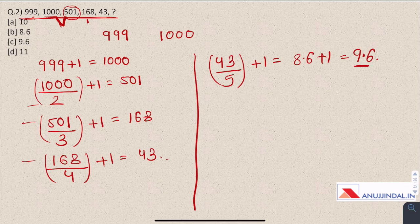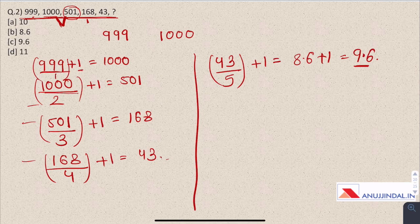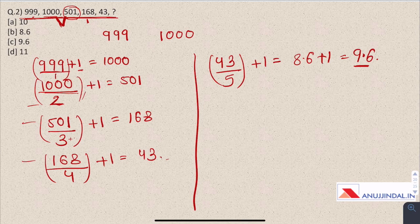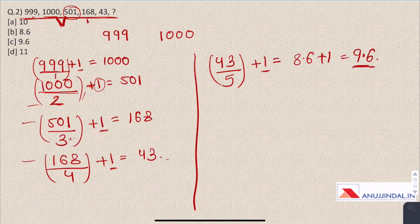Here also in the first number you can write it as 999 divided by 1 plus 1, and here in the numerator we are increasing the numerator by 1 every time, and then whatever number comes we are adding 1 to that number. This is the pattern which is followed in this series and the next number in the series is going to be 9.6. Answer is C.